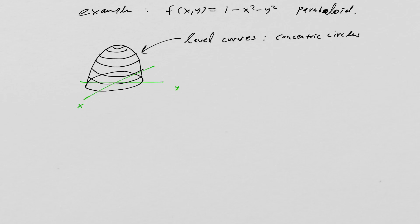So we're going to give an f(x,y) equals 1 minus x squared minus y squared. This is a paraboloid. And it's going to look like this. It's sort of that gumdrop shape like that. And the level curves, of course, are concentric circles.